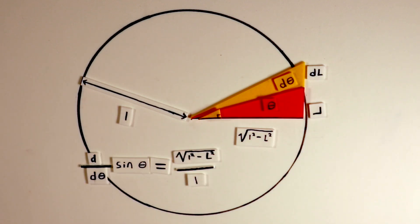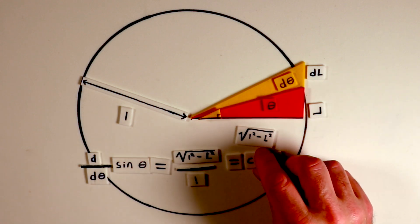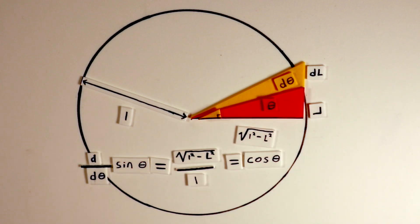Since the horizontal leg of the original triangle is the square root of 1 minus L squared, the ratio dL over d theta equals this value divided by 1. This ratio, importantly, represents the cosine of theta in the original triangle. Equating the left and right sides, the derivative of the sine of theta is equal to the cosine of theta.